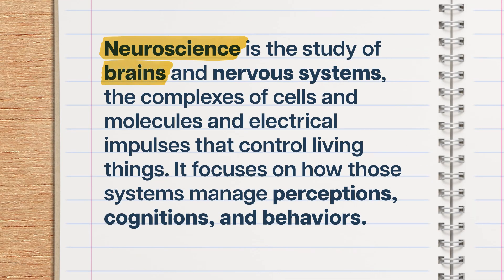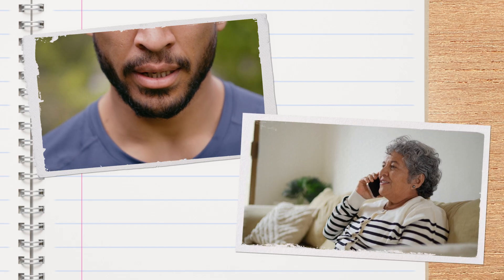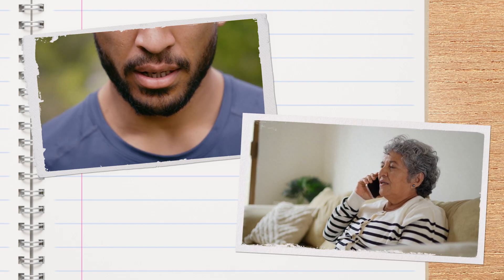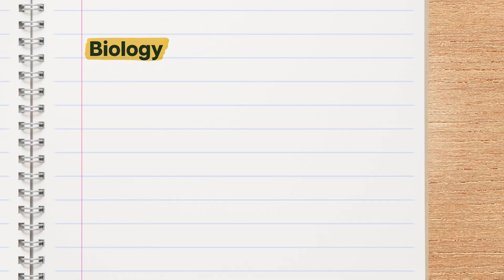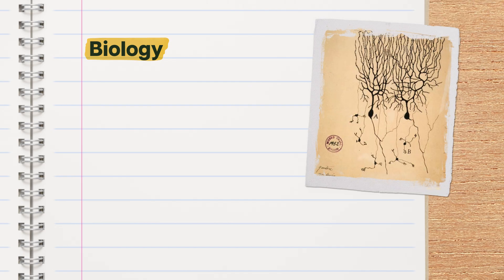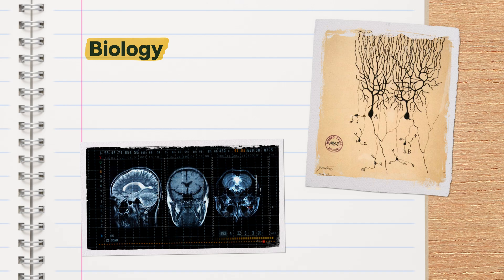Neuroscience is the study of brains and nervous systems, the complex of cells and molecules and electrical impulses that control living things. It focuses on how those systems manage perceptions, cognitions, and behaviors. Those categories cover basically everything we do, from base, automatic processes like breathing, to really high-functioning stuff like talking and contemplating your future as a neuroscience major. Neuroscience started out as a kind of biology, which makes sense because brains and nervous systems are big, important parts of lots of living things. But while people have been studying brains for millennia, the term neuroscience wasn't used until the 1960s. And it's just in the last few decades, with new kinds of brain imaging, that the field has really taken off.